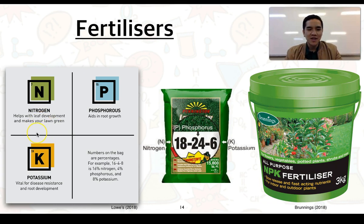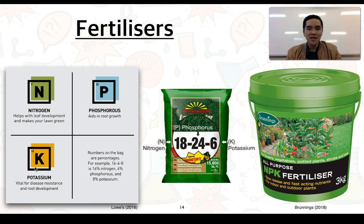Nitrogen helps with leaf development and helps make leaves green and healthy. Phosphorus helps in the growth and development of roots, and potassium is important for disease resistance and root development. From this we can understand the importance of fertilizers especially in terms of food production. However, there are some issues — particularly looking at over-fertilization — and I'll be talking about one of those in the next video. I'll see you guys there.